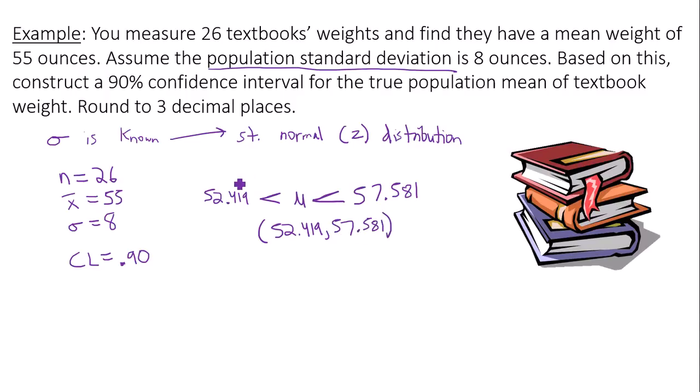The correct interpretation is: with 90% confidence, the true population mean of textbook weights is between 52.419 ounces and 57.581 ounces.